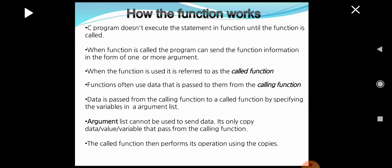How does a function work? A C program does not execute the statements in the function until the function is called. When the function is called, the program can send the function information in the form of one or more arguments. When the function is used, it is referred to as the called function. Functions often use data passed to them from the calling function. Data is passed by specifying variables in a list of arguments. The argument list only copies data passed from the calling function, and the called function performs its operations based on those copies.